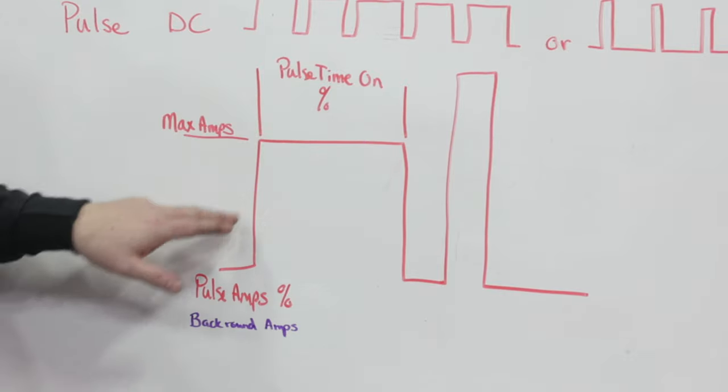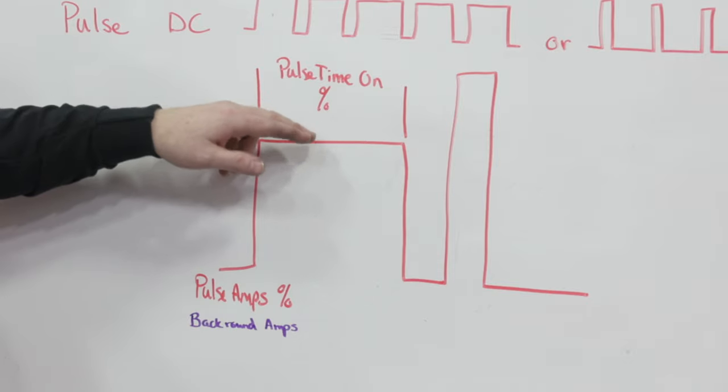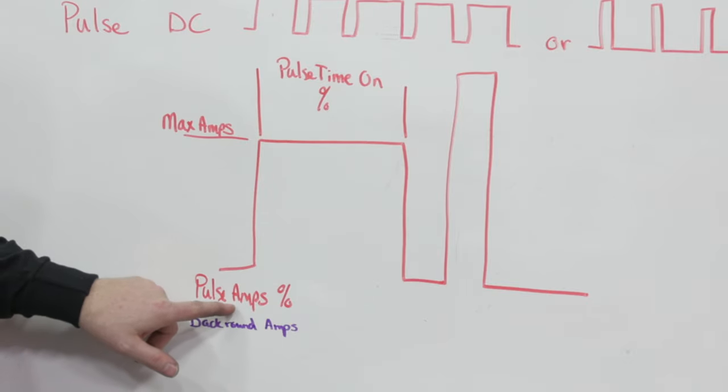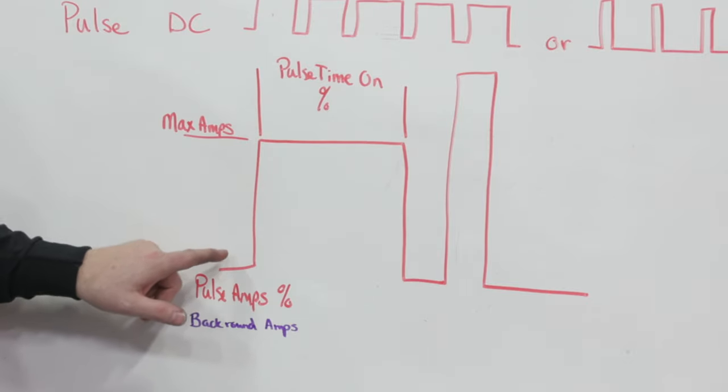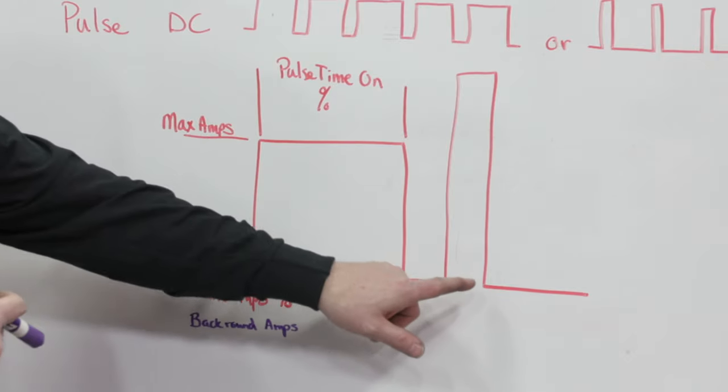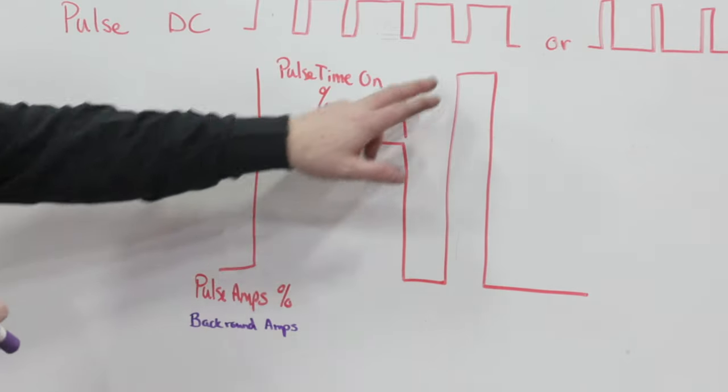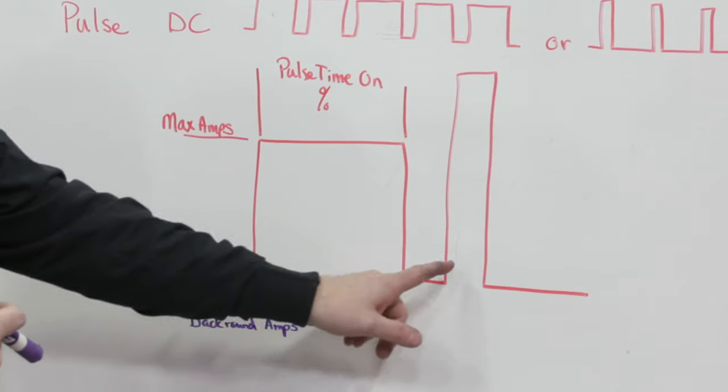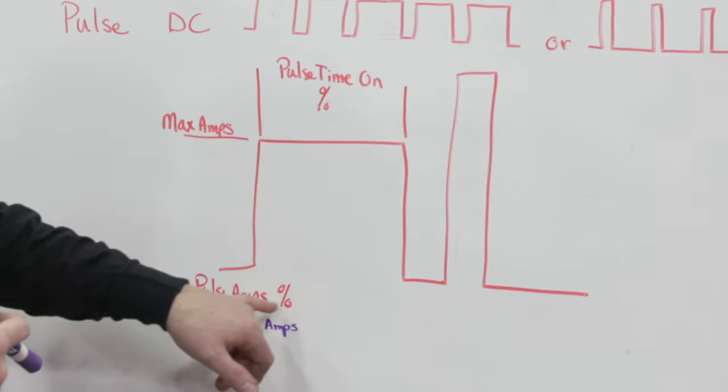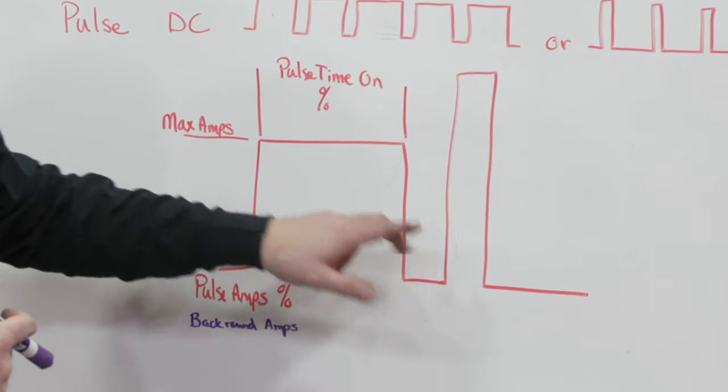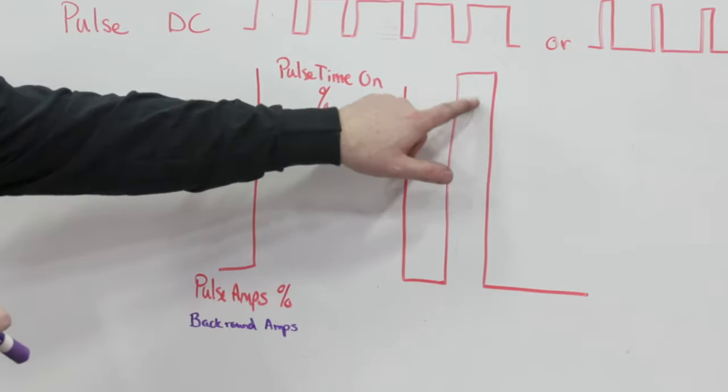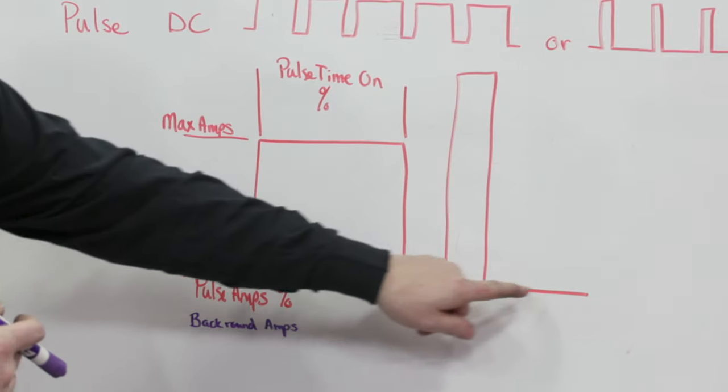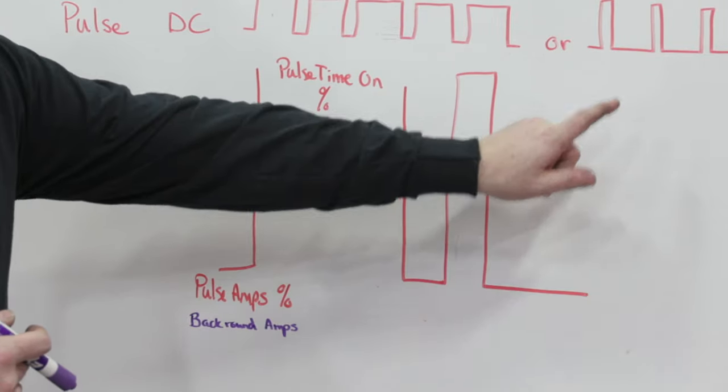It's based on a percentage. So we might have 150 amps set on the machine. Our pulse time on in this here would be about 80%, and our pulse amps or our background amps might be as low as 5%. But then you can see here, this tall and skinny one would be more like 200 amps with a pulse time of maybe 25%, and then our background amps the same 5 amps. But of course, because we're only using 25% on the max amps, we're going to have 75% on that background amp.